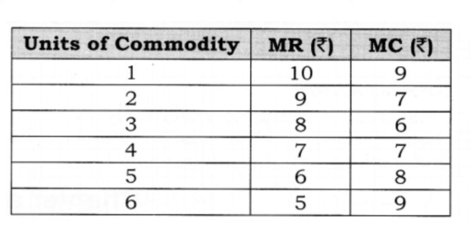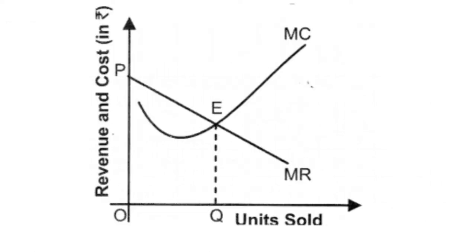According to the table, both conditions of equilibrium are satisfied at the 4th unit of output: marginal cost equals marginal revenue, and marginal cost is rising. Marginal cost is more than marginal revenue when output is produced after 4 units. So producer equilibrium will be achieved at 4 units of output. In this diagram, you can see at point E the marginal cost curve is cutting the marginal revenue curve from below, so producer equilibrium is determined at OQ level of output corresponding to point E.